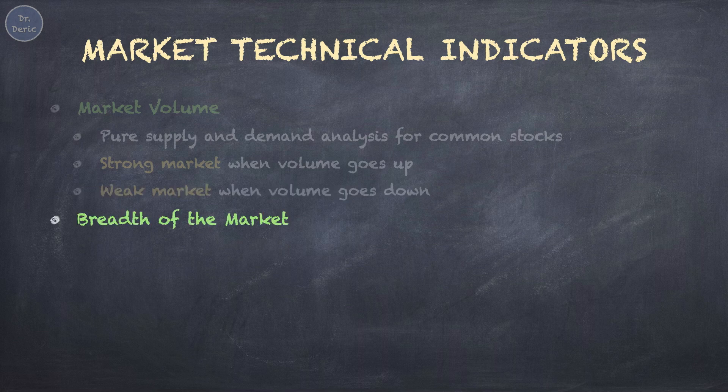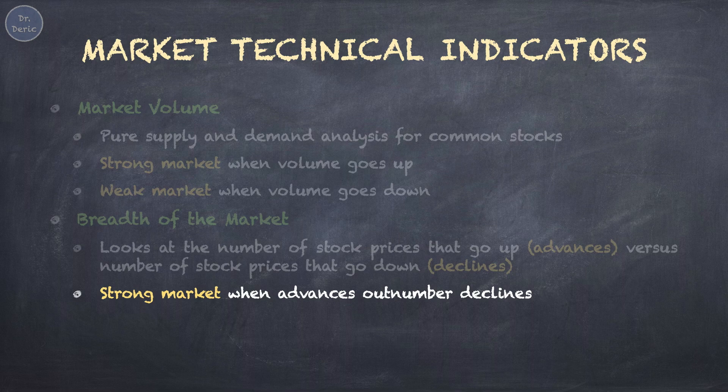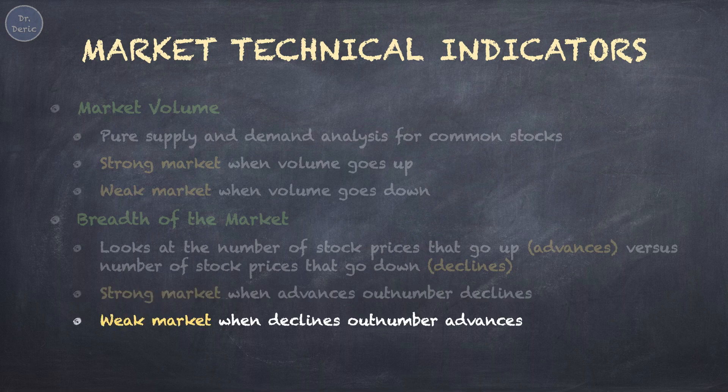Another indicator is the breadth of the market. The breadth of the market assesses the overall health of the stock market by looking at the number of stock prices that go up, advances, versus number of stock prices that go down, declines. In a strong market, advances outnumber declines, indicating that a wide range of stocks is performing well, reflecting overall market strength. Conversely, in a weak market, declines outnumber advances, suggesting that a significant portion of stocks is underperforming, reflecting overall market weakness.